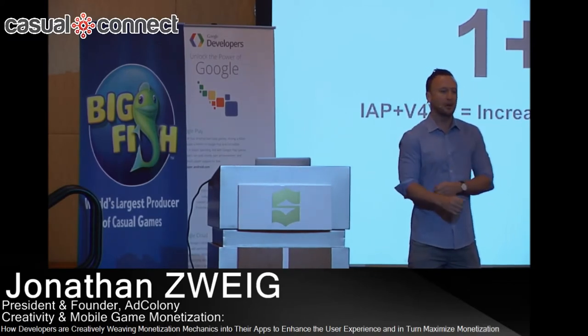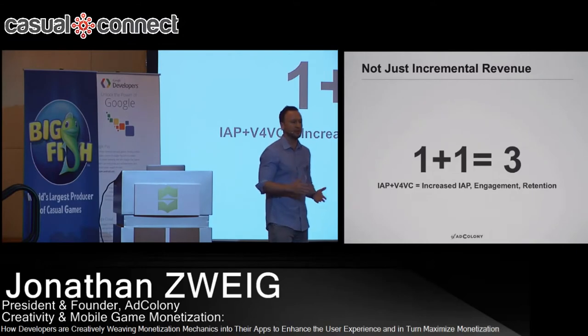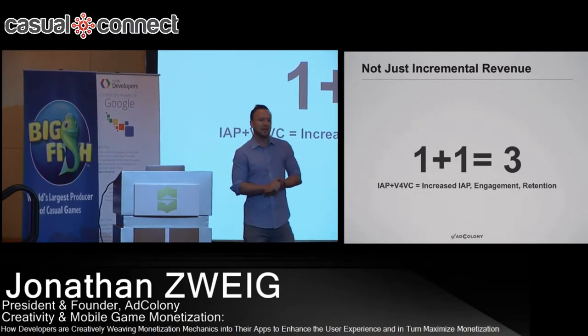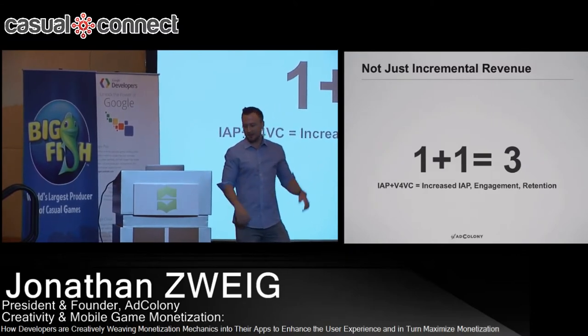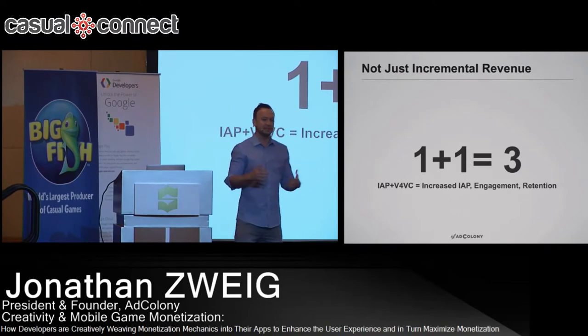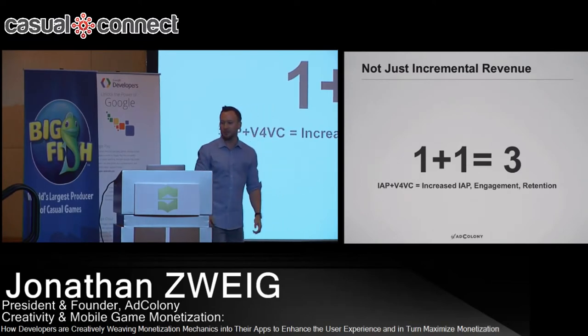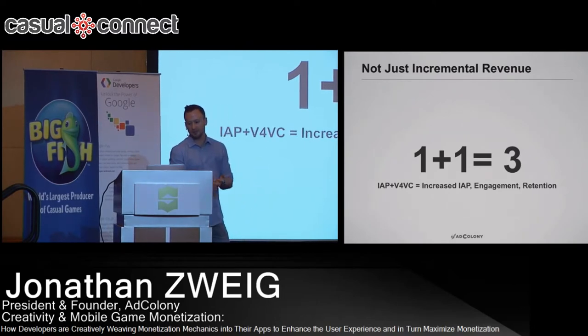So how are you going to make money from the other 95% that literally never pull out their wallet? What we encourage is: track those users over a certain period of time — at least 30 days. And if the user hasn't done any in-app purchases, then that's when you can turn on technologies like Ad Colony. So you can really have both sides of the pie — that's why we like to say 1 plus 1 equals 3: in-app purchases plus Videos for Virtual Currency equals increased in-app purchases, increased engagement, and increased retention.